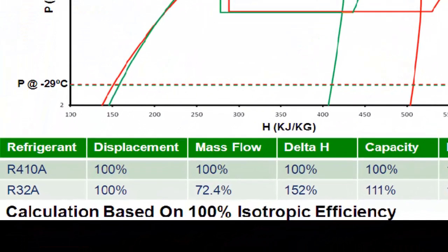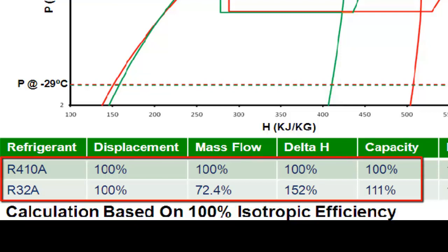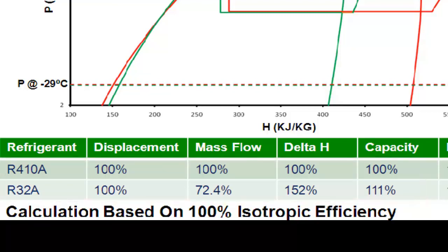Now let's focus on performance. R32 boasts greater cooling capacity compared to R410A, both in cooling and heating. This implies that a smaller amount of gas is required to achieve the same level of cooling and heating.